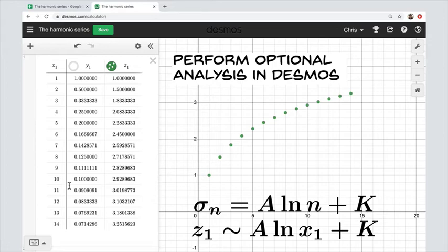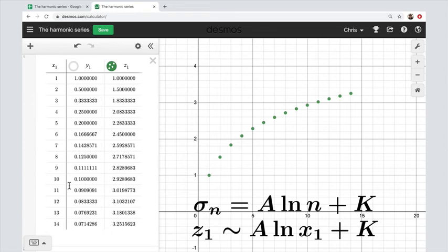And if we put that into the cell, Desmos will try to find A and K to make this relationship as good as possible.